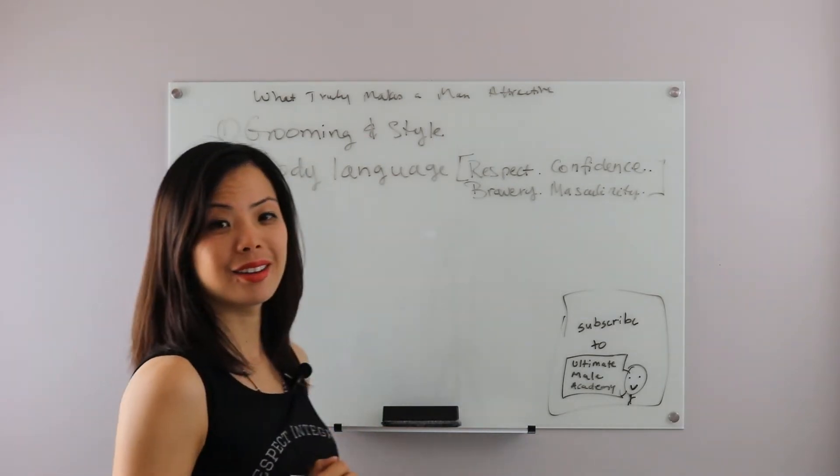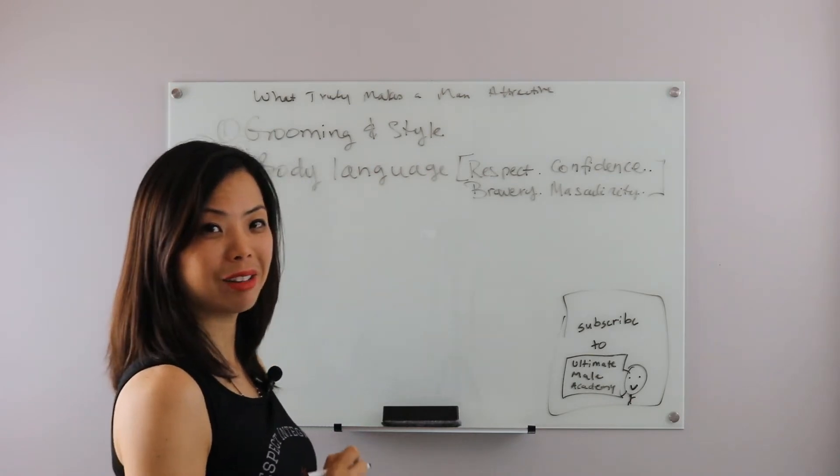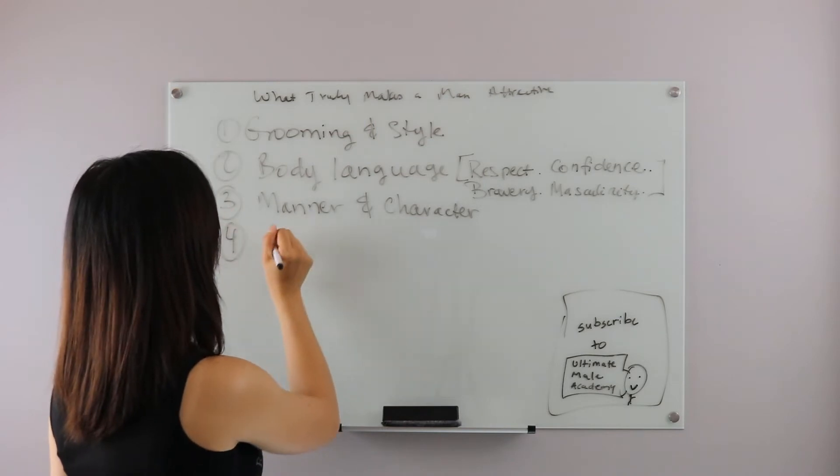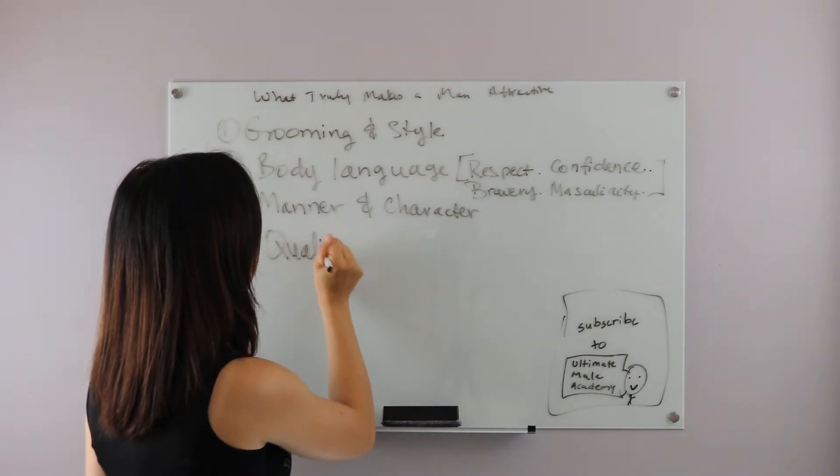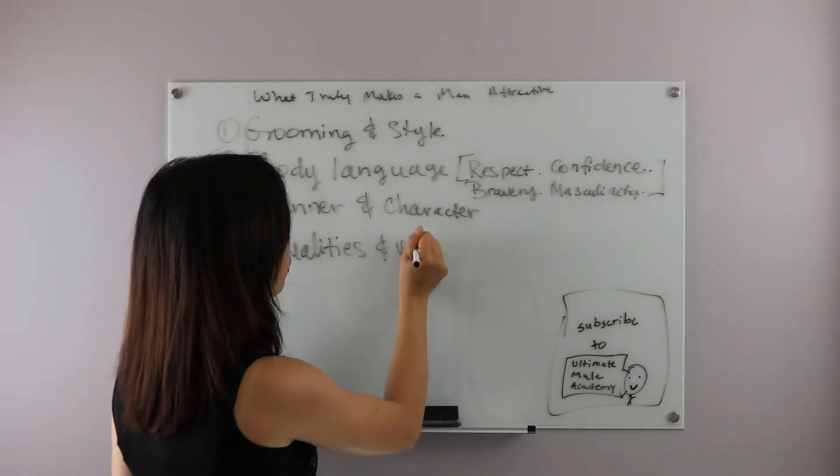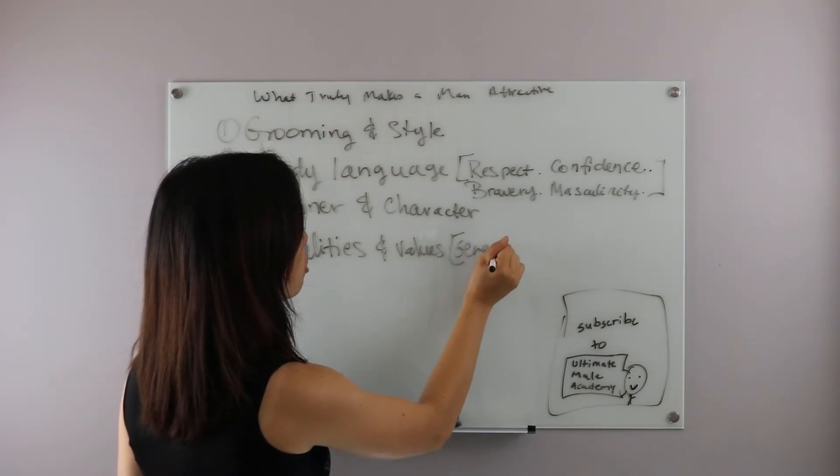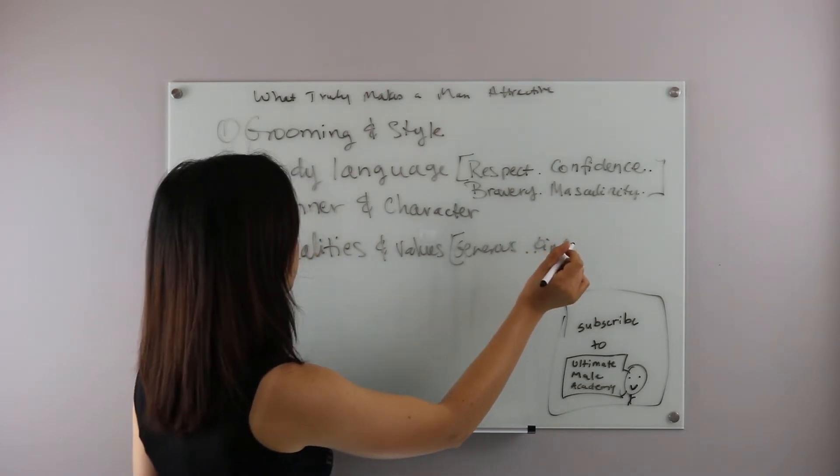The third thing that makes a man attractive is actually his manners and character. How you show your politeness, courtesy to others. For example, being a generous person. You can be kind. You can be humble.